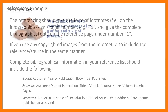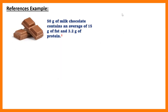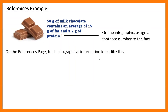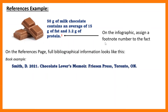I'll show you an example of what the referencing looks like. Here's a little chunk of your infographic — say you're talking about chocolate. You can see there's a little footnote number there. Maybe the number would be on the image too, depending on where you got the image from. That's what your infographic is going to look like — the referencing on it is going to be small. On the references page, you'll have your full bibliographical information. For a book, I'm looking for the author, the date, the name of the book, and the publisher.